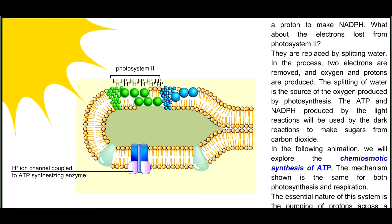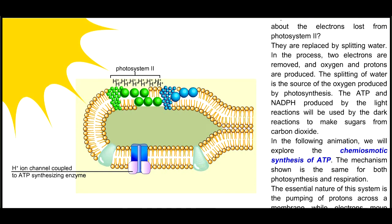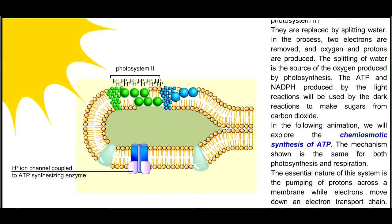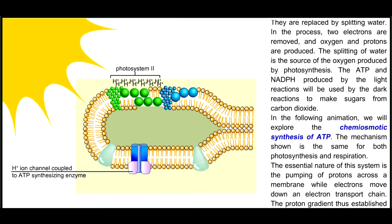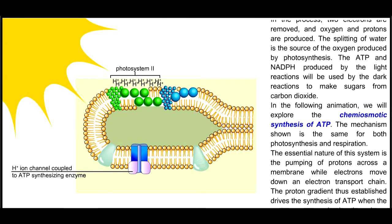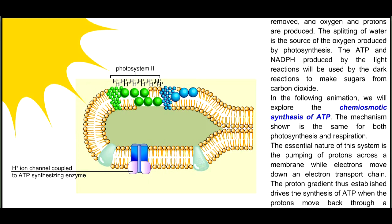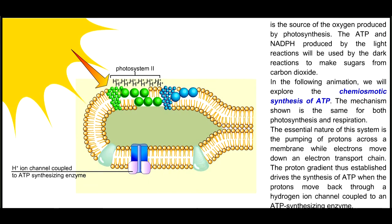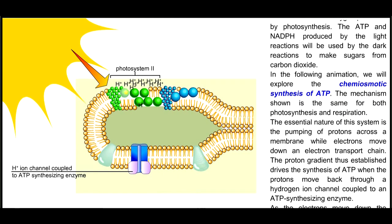The essential nature of this system is the pumping of protons across a membrane while electrons move down an electron transport chain. The proton gradient thus established drives the synthesis of ATP when the protons move back through a hydrogen ion channel coupled to an ATP synthesizing enzyme.